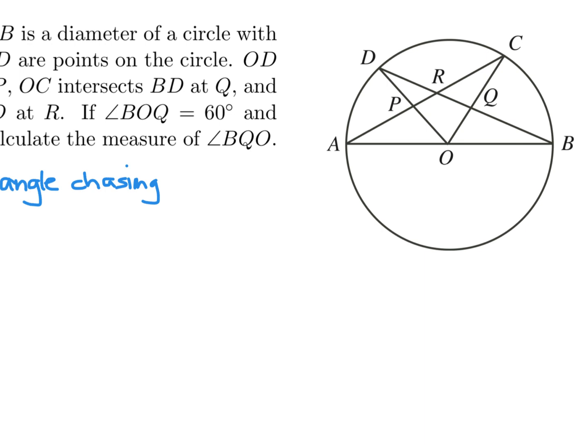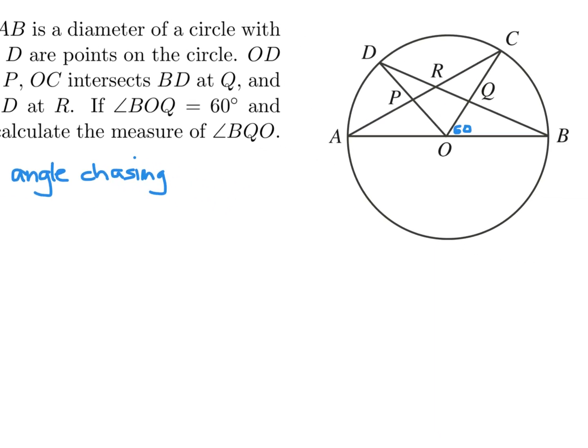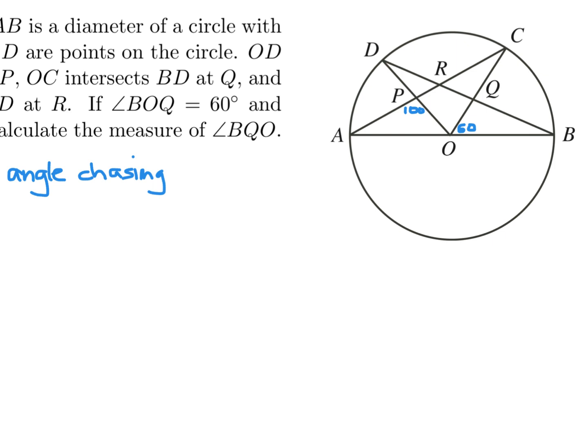So BOQ is 60 in here, and then the only other thing they gave me was APO, so this is 100. So what am I trying to figure out? BQO, so this angle in here. I'll just call that theta. I think I just use the simple triangular method. The angles of a triangle add up to 180, so this guy in here would be 120 minus theta.